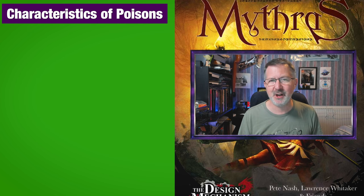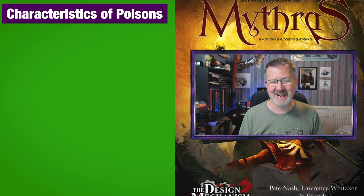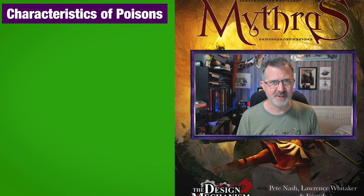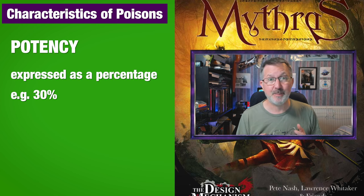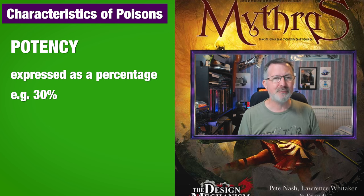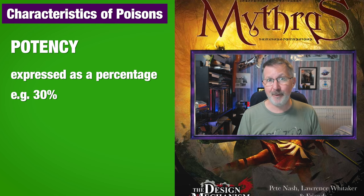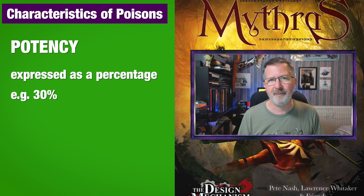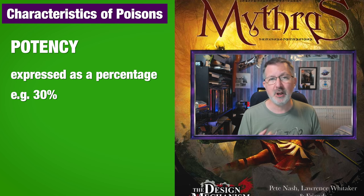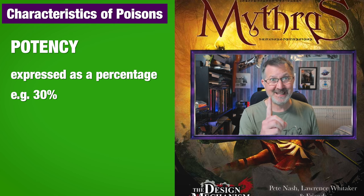I'm going to quickly give you a rundown of the poison elements and what they mean. The first element — and perhaps the most important, and the one that can be a little bit complicated — is potency. Potency is expressed as a percentage skill for that poison. In order to infect a character, the poison, or the GM, would have to roll that percentage or less for the poison to be effective. For example, if the potency of the poison was 30, the GM would roll a percentile dice and if the result was 30 or less, the poison has taken effect.